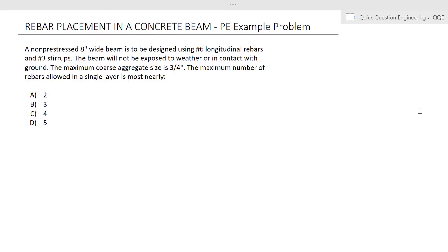Our problem states that a non-prestressed 8-inch wide beam is to be designed using number 6 longitudinal rebars and number 3 stirrups. The beam will not be exposed to weather or in contact with ground. The maximum coarse aggregate size is 3/4 of an inch. So the maximum number of rebars allowed in a single layer is most nearly.